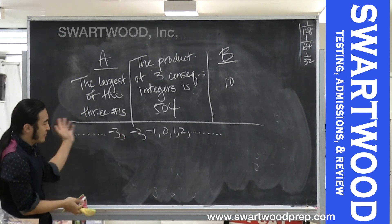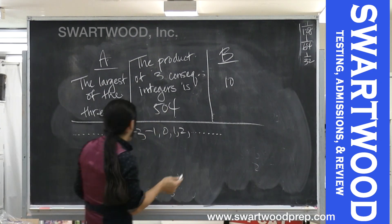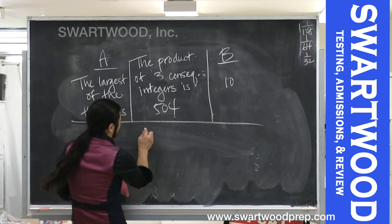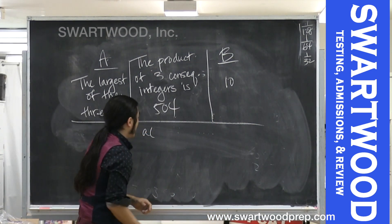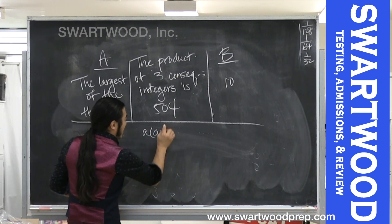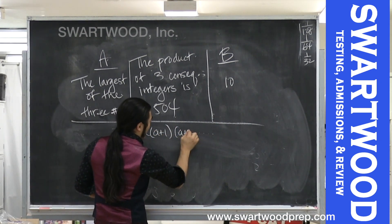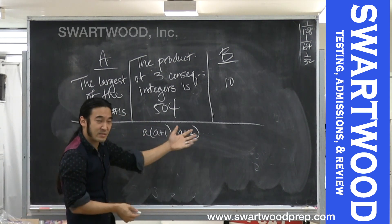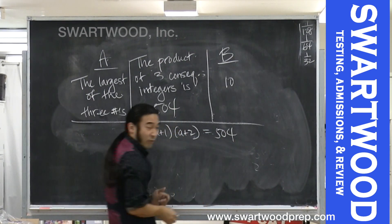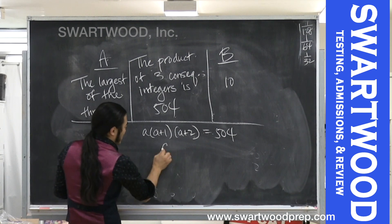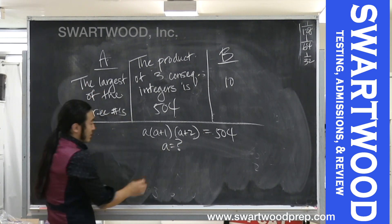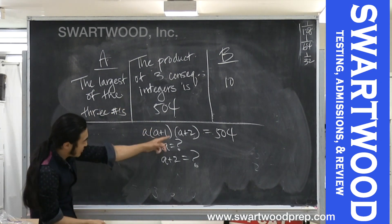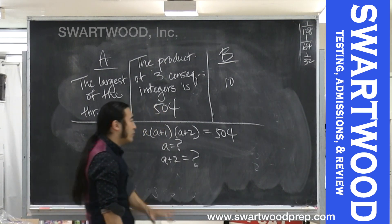One way to do this is to 'geek it out' algebraically. You'd call the first integer a, the next consecutive one a+1, and the next a+2. Their product equals 504. You could try to solve for a and then find a+2 for the largest. But that equation is cubic, which is a pain, so I wouldn't go there.